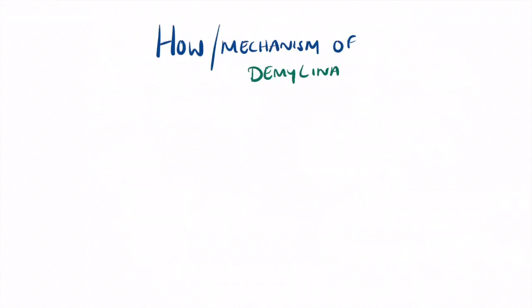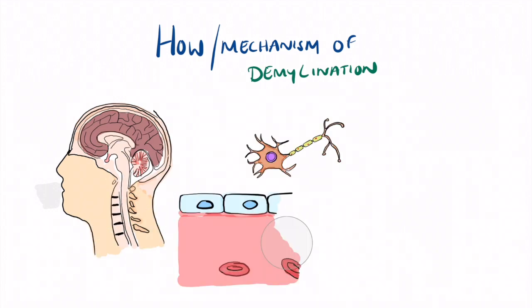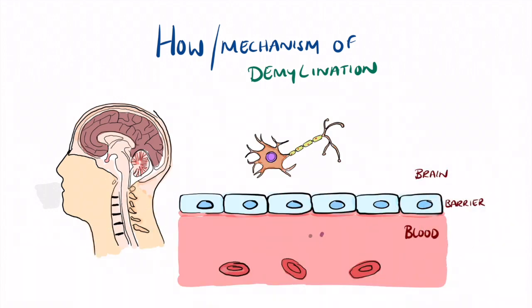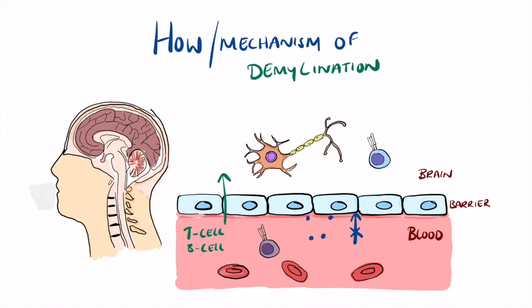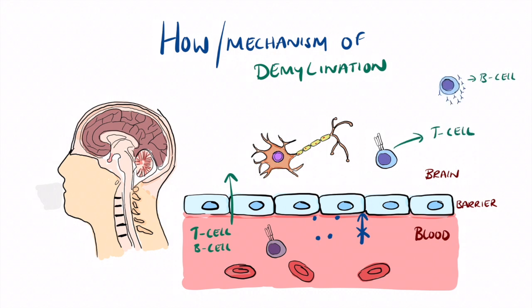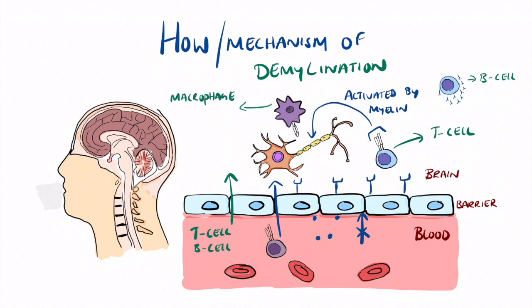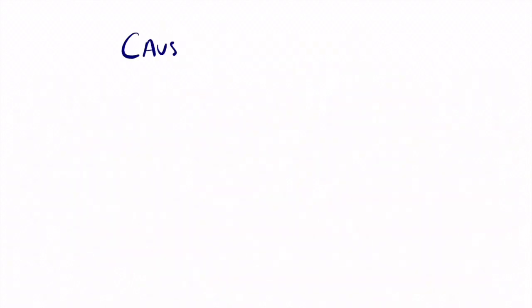Let's look at the mechanism of how demyelination occurs. In the brain there is a blood-brain barrier which is very selective, only allowing certain molecules such as T cells and B cells to enter. In multiple sclerosis, these become activated against the myelin. Once T cells are activated, they cause further B cells to activate and increase receptors on the barrier cells, leading to extravasation and increased permeability of molecules such as macrophages. These then target the myelin, leading to its breakdown — so overall, increased permeability of immune cells and autoimmune mechanisms attack the neuromyelin.